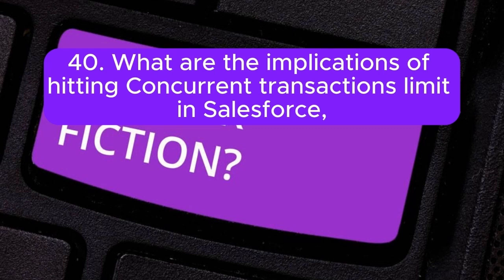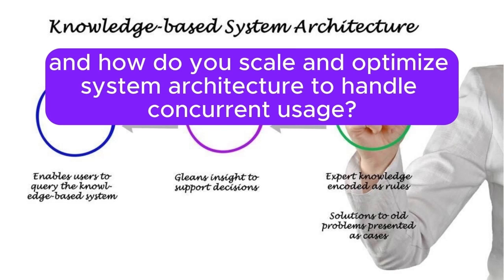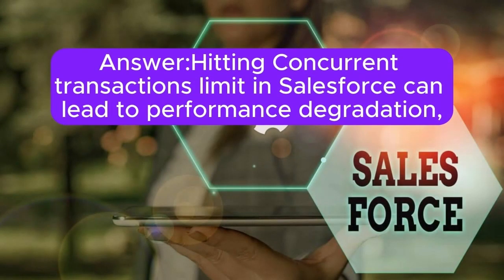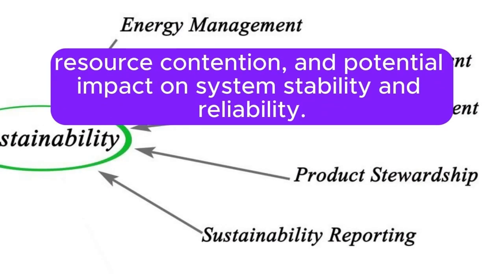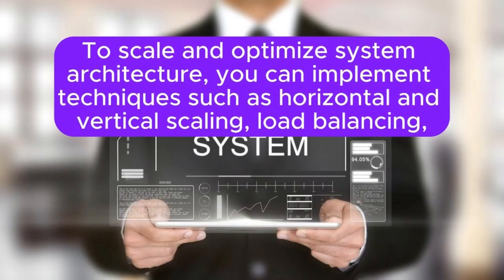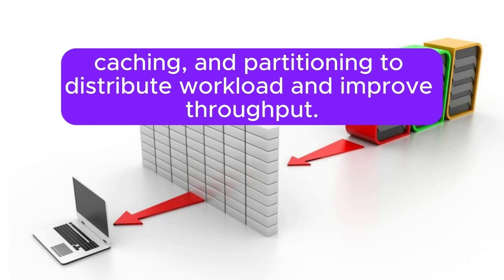Question 40: What are the implications of hitting concurrent transactions limit in Salesforce, and how do you scale and optimize system architecture to handle concurrent usage? Answer: Hitting the concurrent transactions limit in Salesforce can lead to performance degradation, resource contention, and potential impact on system stability and reliability. To scale and optimize system architecture, you can implement techniques such as horizontal and vertical scaling, load balancing, caching, and partitioning to distribute workload and improve throughput.